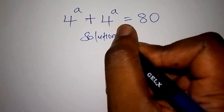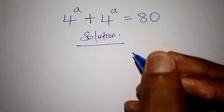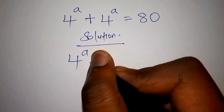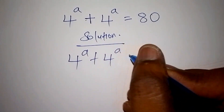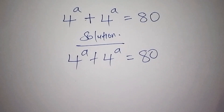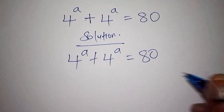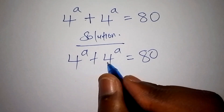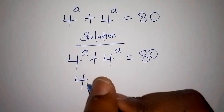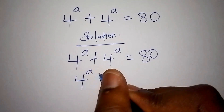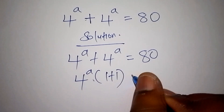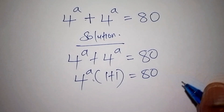This is the problem that we have: 4 to the power of a plus 4 to the power of a is equals to 80. The first thing we need to do is factorize 4^a + 4^a. This can be written as 4 to the power of a, times bracket 1 plus 1, is equals to 80.